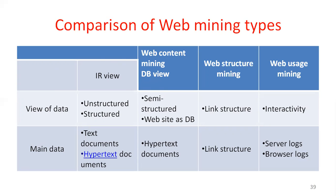For web structure mining, the view of data is in the form of links — if you click one page, it automatically displays another linked page. For web usage mining, the view of data involves interaction. In the information retrieval view, data includes text documents and hypertext documents. The main data for web structure mining is hyperlinks and link structure, while for web usage mining it is server logs and browser logs.